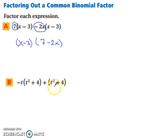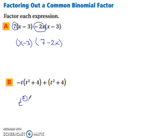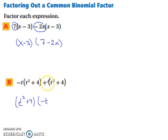Let's try the next one. Notice how you have t squared plus 4 in both terms. So you're going to factor that out, giving you t squared plus 4 on the outside. Now you write the remaining piece. You have negative t, and you can distribute a 1 here — so plus 1 — because you need a binomial.